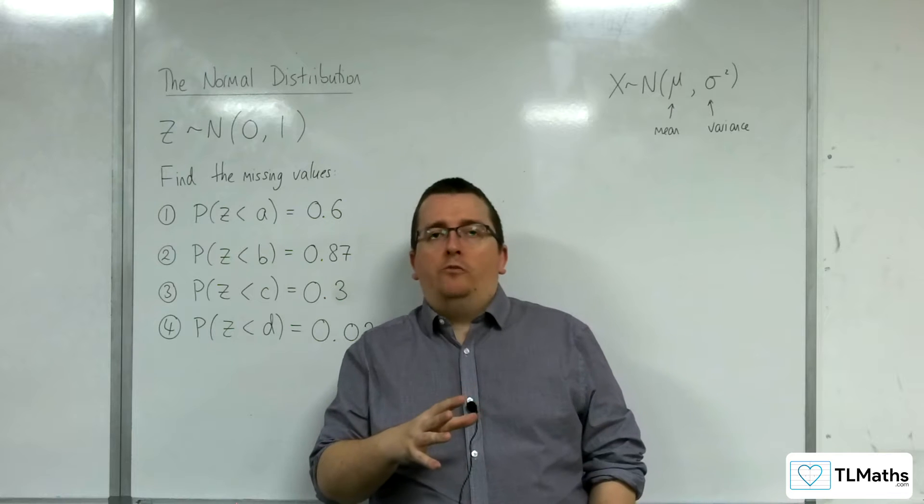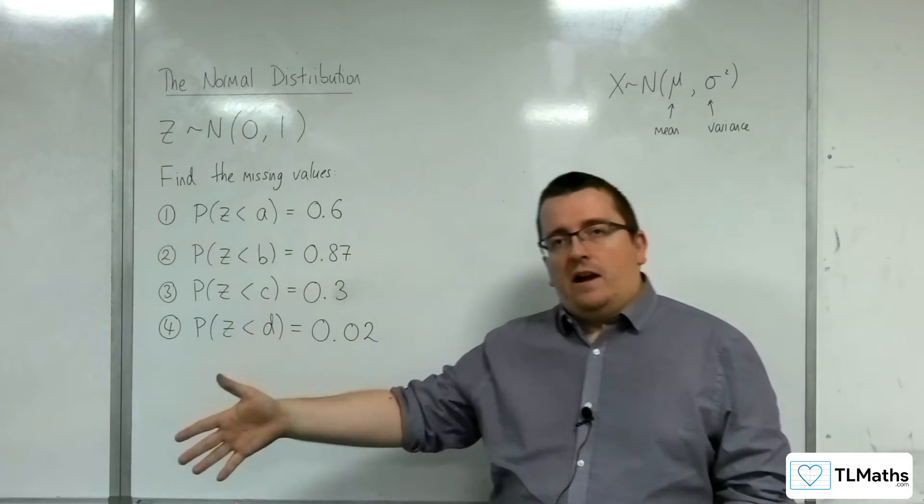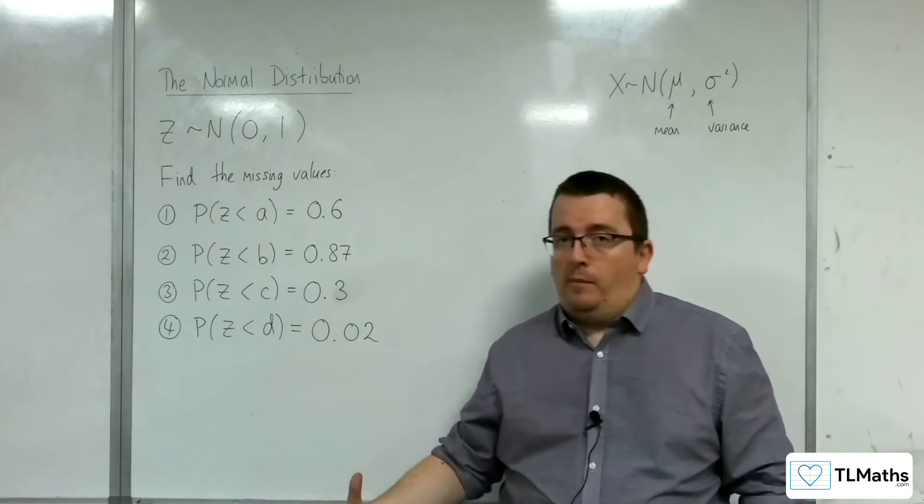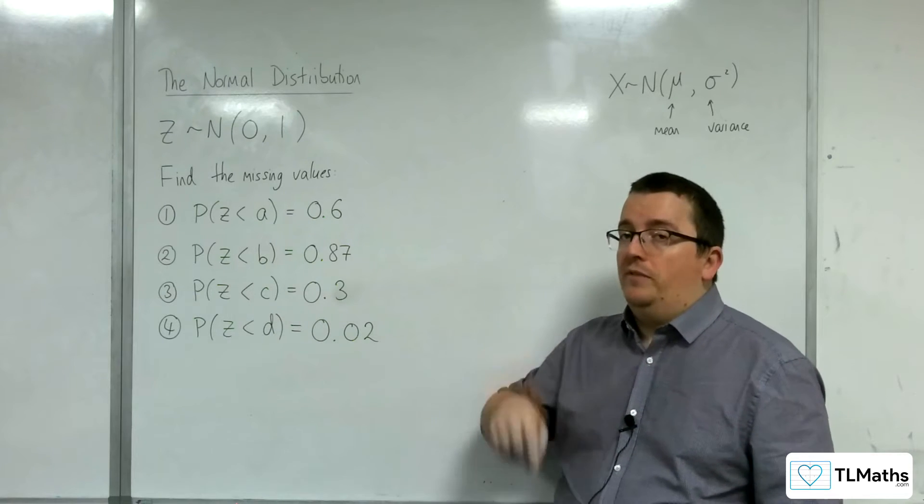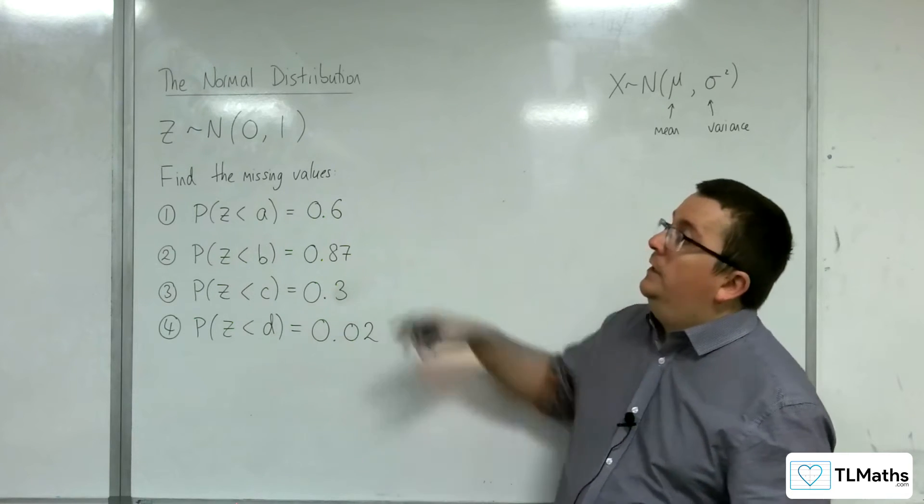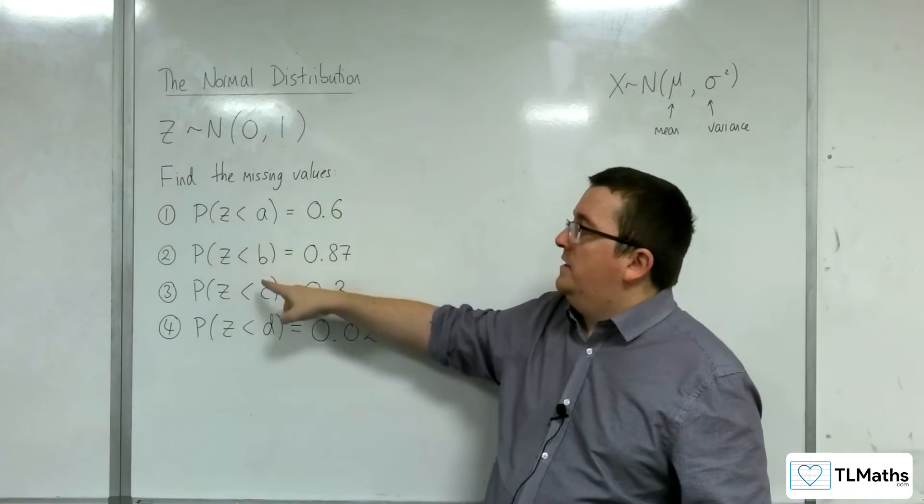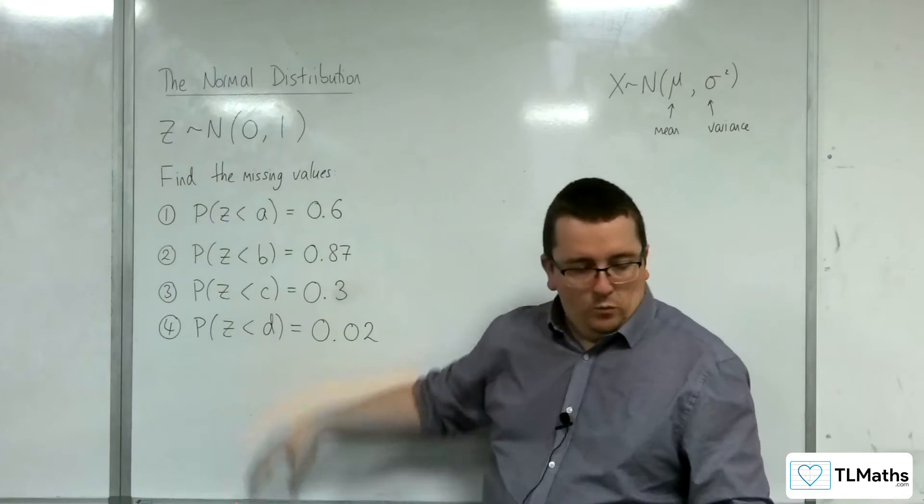We've been dealing with finding all of those probabilities, but now what we're going to be doing is working backwards. Given the probability, can we find the corresponding value of z in this case? We're going back to the standard normal distribution, and we need to find these missing values, and I'm going to explain what these mean.